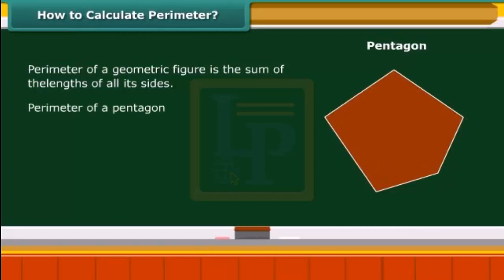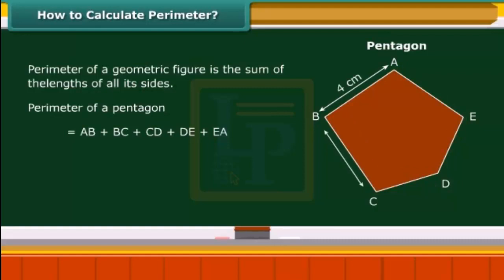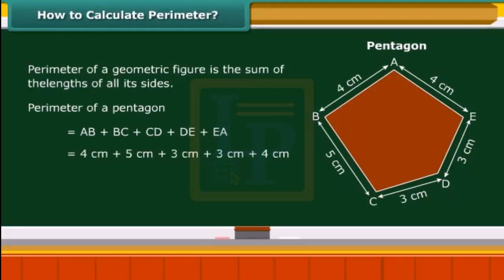Suppose the lengths of the 5 sides AB, BC, CD, DE, and EA are: AB = 4 cm, BC = 5 cm, CD = 3 cm, DE = 3 cm, and EA = 4 cm. The perimeter of the pentagon is 4 cm + 5 cm + 3 cm + 3 cm + 4 cm, which equals 19 cm.